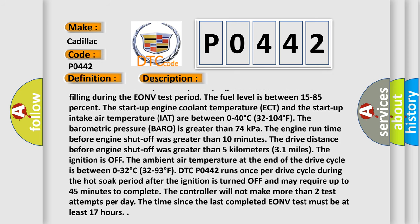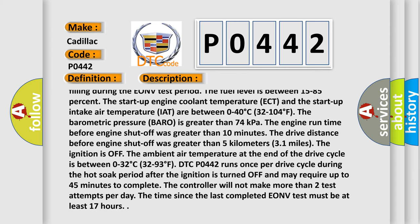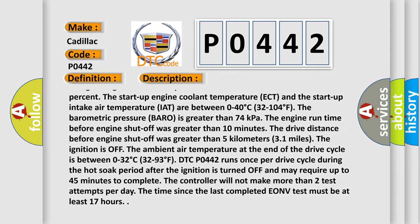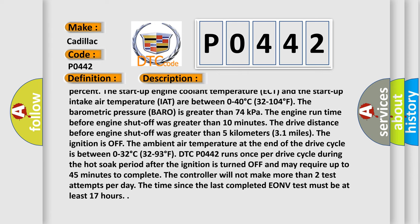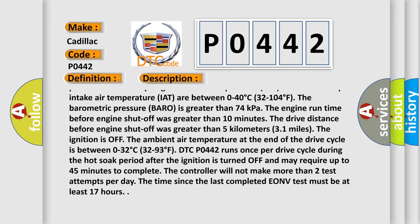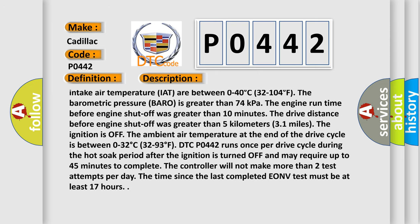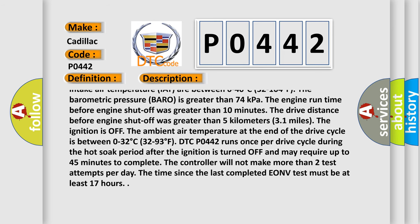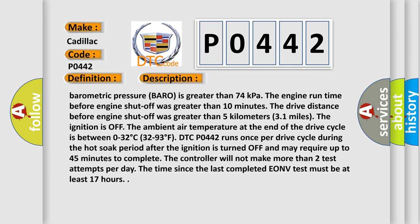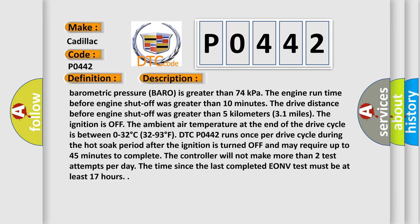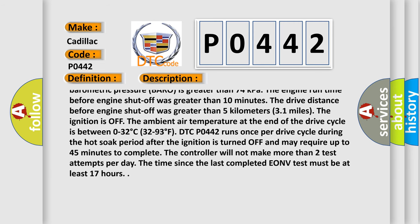The ignition 1 voltage is between 10 to 16 volts. The barometric pressure is greater than 74 kilopascals. No fuel filling during the EONV test period. The fuel level is between 15 to 85 percent. The startup engine coolant temperature and the startup intake air temperature are between 0 to 40 degrees Celsius (32 to 104 degrees Fahrenheit). The engine run time before engine shutoff was greater than 10 minutes. The drive distance before engine shutoff was greater than 5 kilometers.